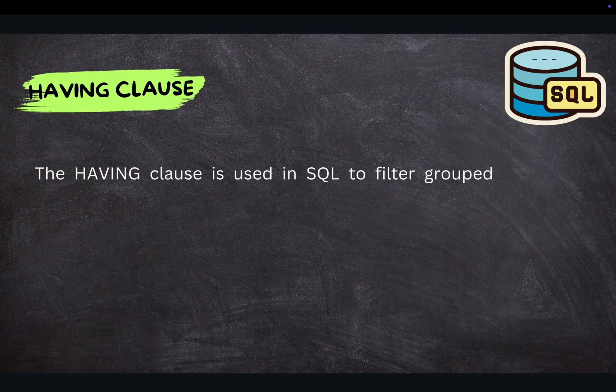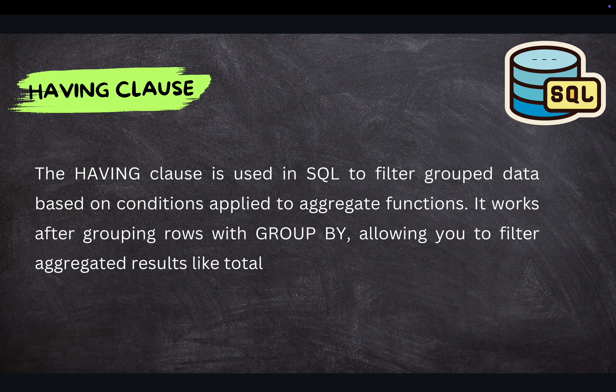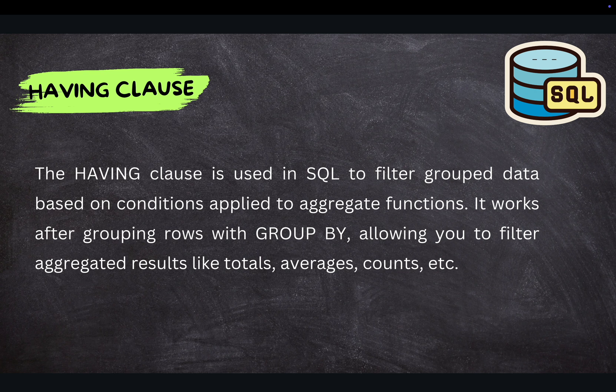The HAVING clause is basically used to filter SQL aggregated results. So whenever you are going to apply any aggregated operators — with the help of GROUP BY or without using GROUP BY — and in case you want to filter that information, you need to utilize the HAVING clause. More specifically, with the help of HAVING clause, we can filter the data that has been grouped, and it works after grouping the rows with the help of GROUP BY.